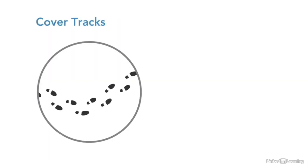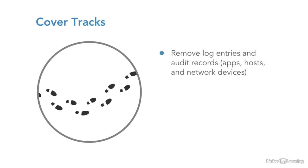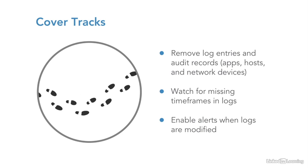The last phase of ethical hacking is covering tracks. Attackers want to make sure they don't get caught, so they remove log entries and audit records from individual apps, hosts, and network devices like firewalls, routers, and VPN appliances. From a security analyst perspective, you should always look for missing timeframes in logs that could indicate the log was wiped by an attacker. You should also ensure you have centralized logging with log alerts enabled, so administrators are notified when suspicious log entries appear or logs get modified.